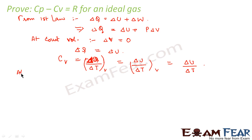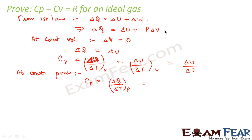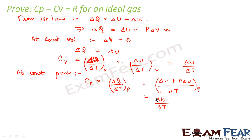Now let us write an expression for Cp. In order to do that, let us consider the gas enclosed in the cylinder at constant pressure. We can write Cp equals delta Q by delta T at constant pressure. What will delta Q be in that situation? Delta Q would be delta U plus P delta V. So Cp equals (delta U plus P delta V) divided by delta T at constant pressure, which we can write as delta U by delta T at constant pressure, plus P delta V by delta T at constant pressure.